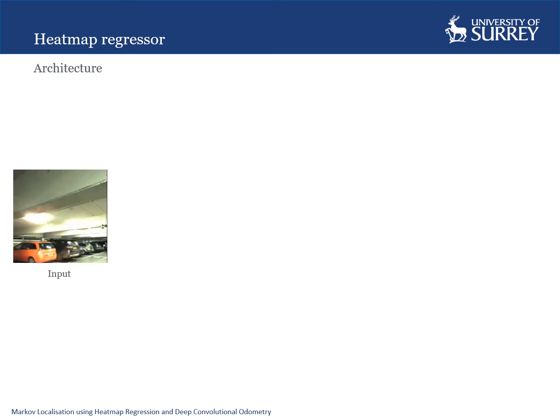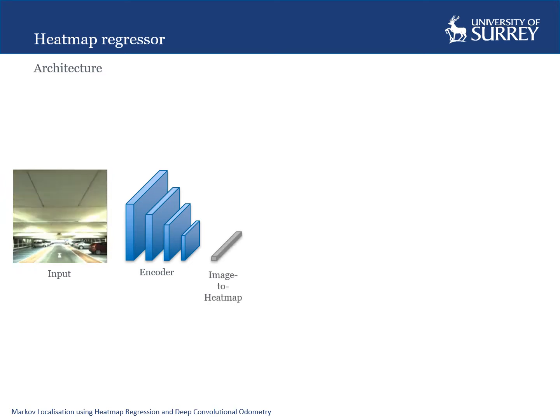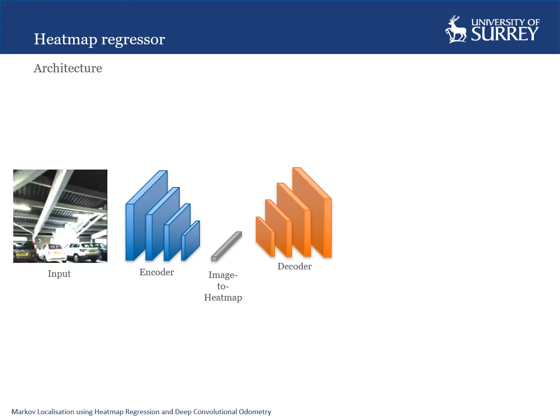Our heatmap regressor is an encoder-decoder architecture. Images are first encoded into a feature space. However, instead of using a multilayer perceptron to regress pose, we pass the features through an image-to-heatmap bridge. The resulting features are then decoded into heatmaps.